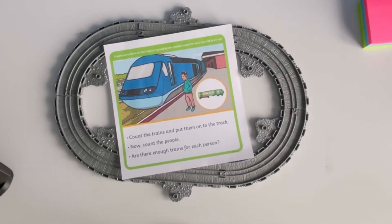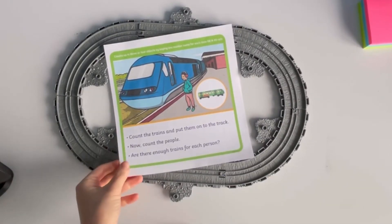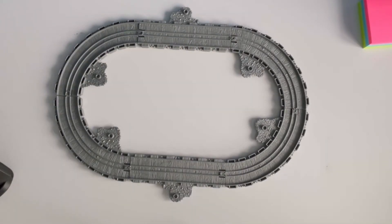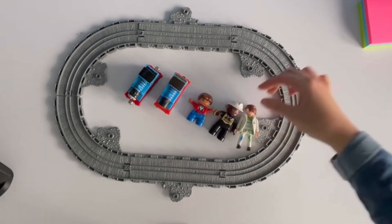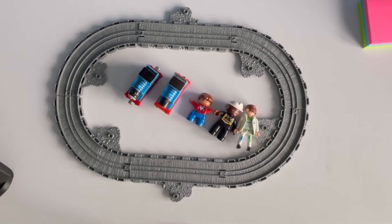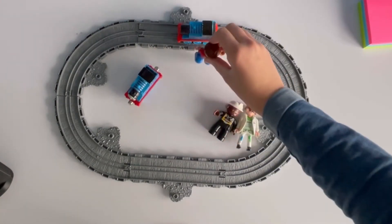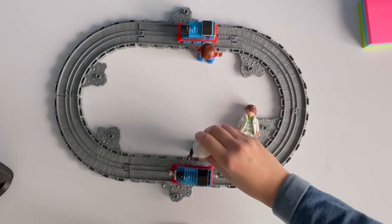This counting trains activity helps to strengthen children's early counting skills by checking their one-to-one correspondence. Can children count the trains onto the track and then count the people? Are there enough trains for each person?